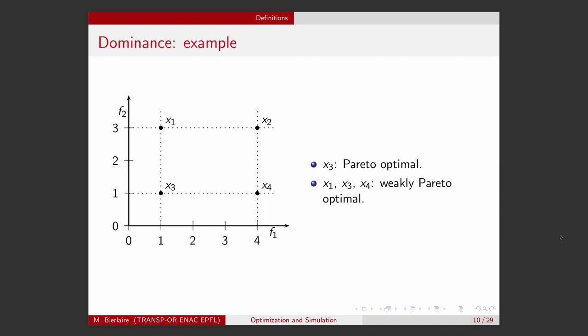Let's take again our example with two objectives and the four feasible solutions. In this case, X-3 is Pareto-optimal. Indeed, it's not dominated by any other points. And X-1, X-3, and X-4, the three of them are weakly Pareto-optimal. Indeed, there is no feasible point that strictly improves F-1 and F-2 for the three of them. So, this illustrates the fact that P-star is included in WP-star, using the definition that we have introduced in the previous slide.